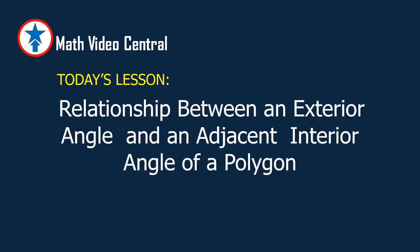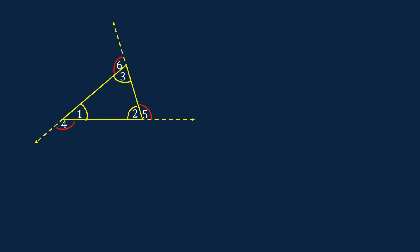Today's lesson is the relationship between an exterior angle and an adjacent interior angle of a polygon. This figure is a triangle, a polygon of three sides. Angle 5 is an exterior angle of the polygon. Angle 6 is also an exterior angle of the polygon. Angle 4 is also an exterior angle of the polygon.